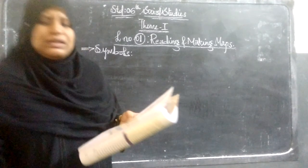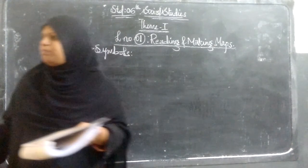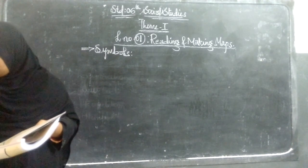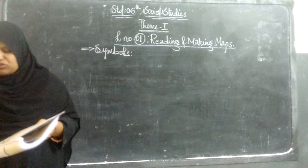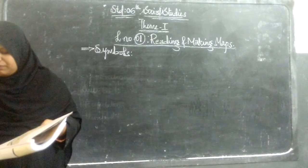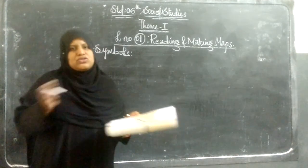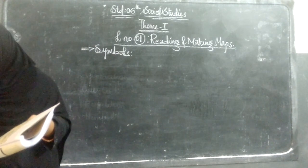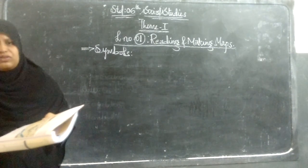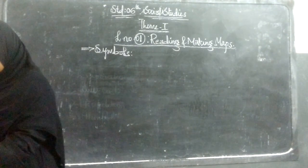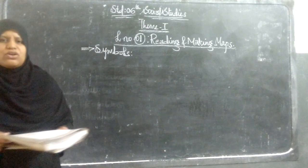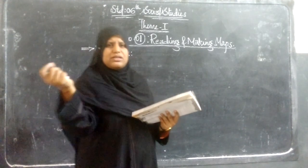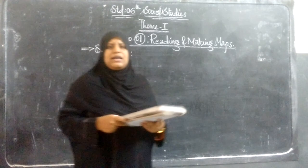You know that maps are drawn on a surface where we cannot show actual things without using different aspects. We need to reduce the things shown on the map. As we discussed about the scale, the actual place gets reduced. We cannot draw the actual distance or show the actual places, so we use scale — like one centimeter representing a distance — as we discussed in previous classes.